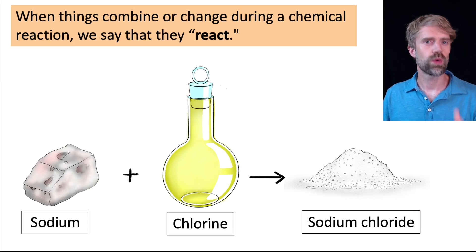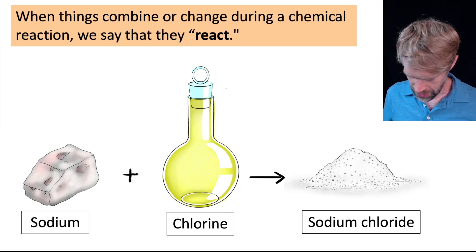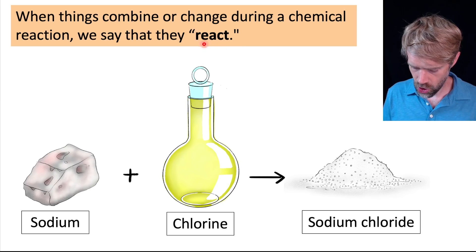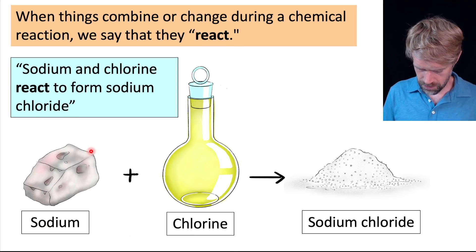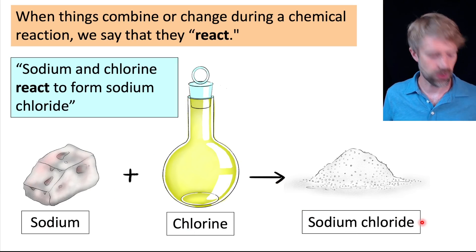When things combine or change during a chemical reaction, we say that they react. So, in other words, for the reaction that we see here, we could say that sodium and chlorine react to form sodium chloride.